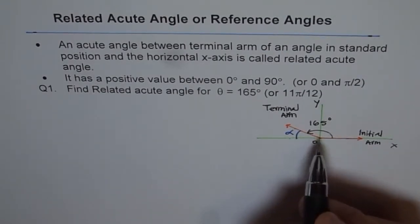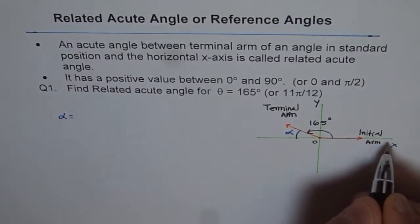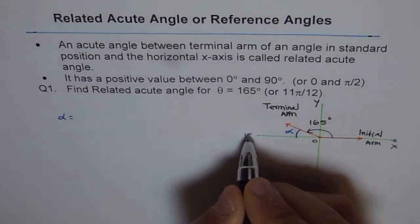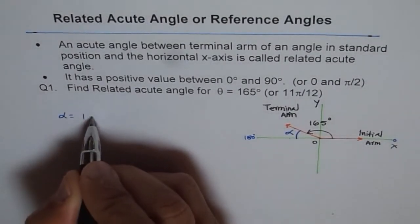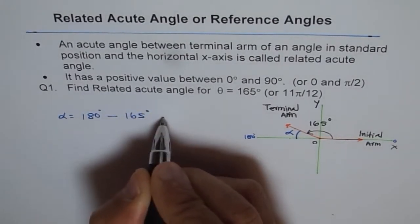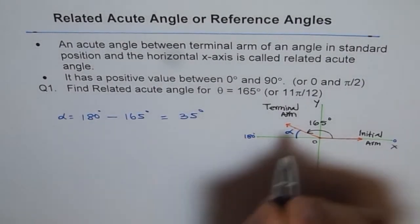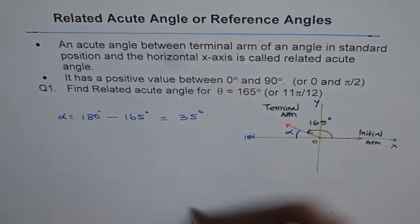Let's find acute angle in degrees first and then we'll do it in radians. So α = 180 degrees, this is 180 degrees. So 180° - 165° = 35°. So that is the related acute angle α.